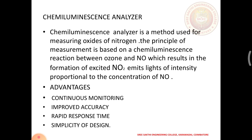Then chemiluminescence analysis. Chemiluminescence analysis is a method used for measuring emissions of nitrogen oxides. The principle of measurement is based on a chemiluminescence reaction between ozone and NO, which results in the formation of excited NO2. It emits light of intensity proportional to the concentration of nitrogen oxides. Advantages of this system include continuous monitoring, improved accuracy, rapid response time, and simplicity of design.